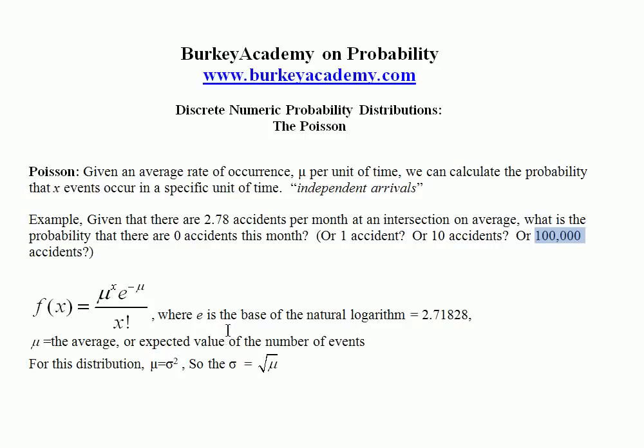Another curious thing is that for this Poisson distribution, whatever the number is for the mean, that is also the same as the variance for the distribution. So if you want to know the standard deviation, that's the square root of the mean. So that's kind of an interesting fact to know about the Poisson.